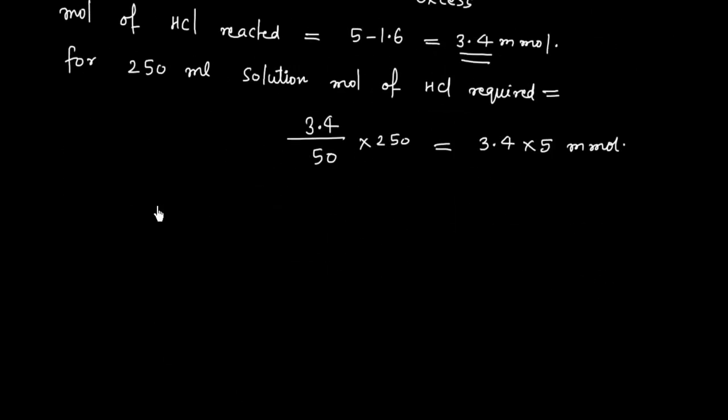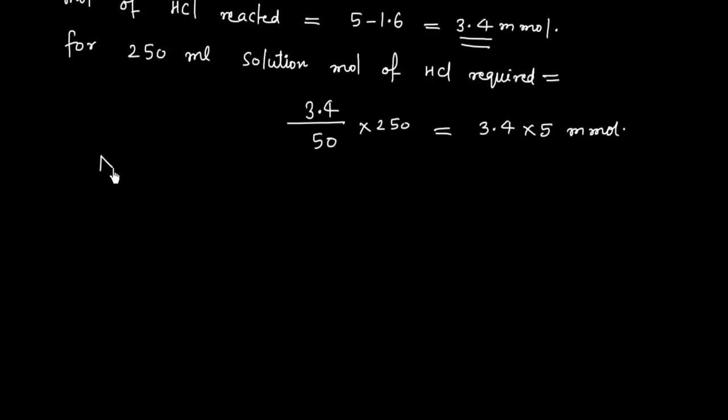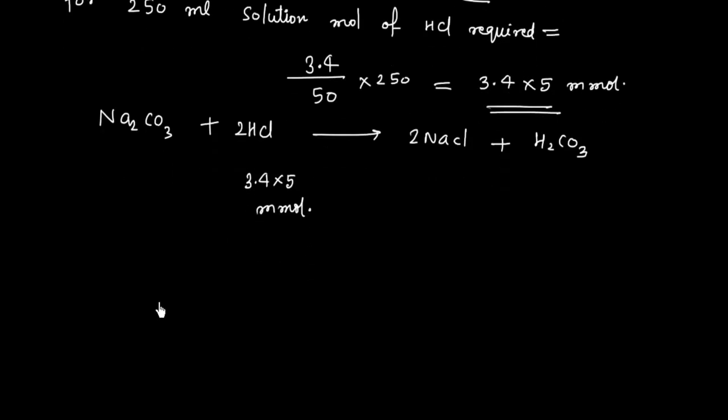So this is moles of HCl required. Now we can write reaction. Na2CO3 will react with 2 HCl and this will give you 2 NaCl plus H2CO3. Now this is the moles of HCl required, that is 3.4 into 5 millimole. So once I know the millimole of HCl, we can calculate moles of Na2CO3.